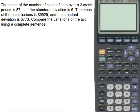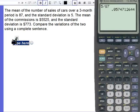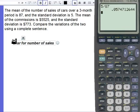Turn on your calculator, take the standard deviation, divide by the mean, and the mean is 87. Take what that is and make it into a percentage. So C-bar for number of sales equals 5.7%.